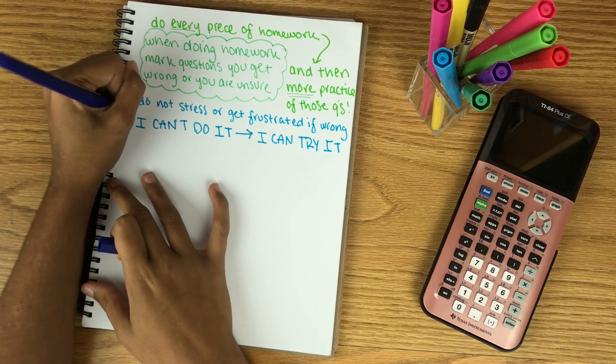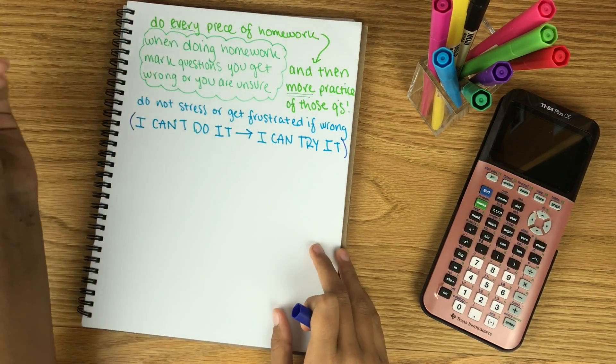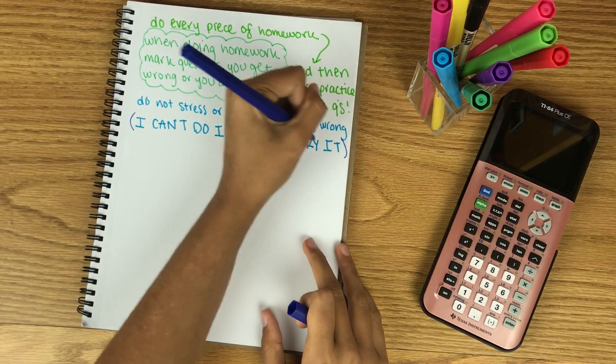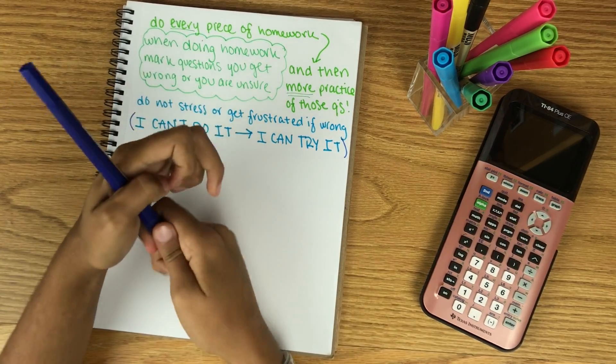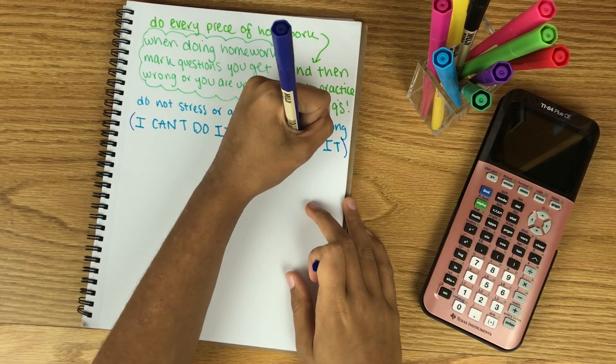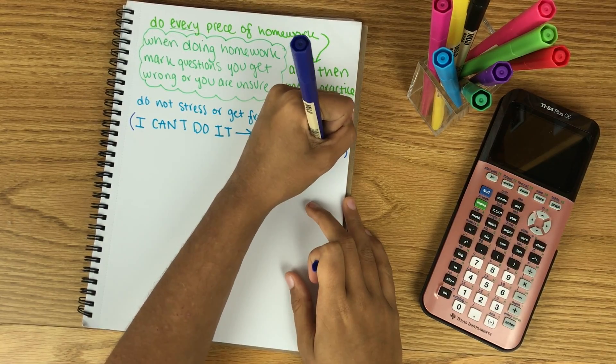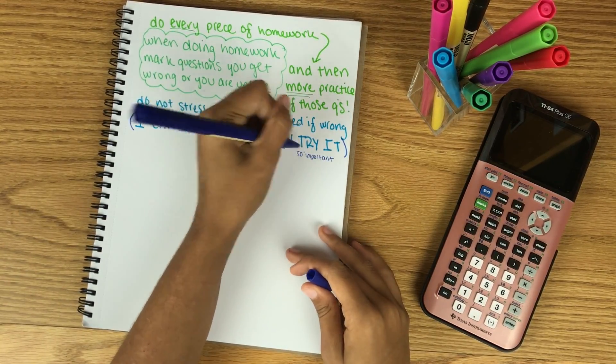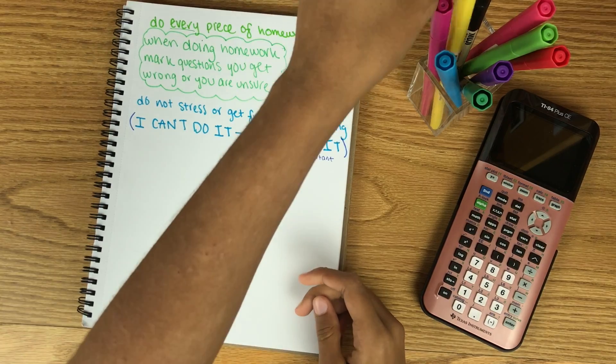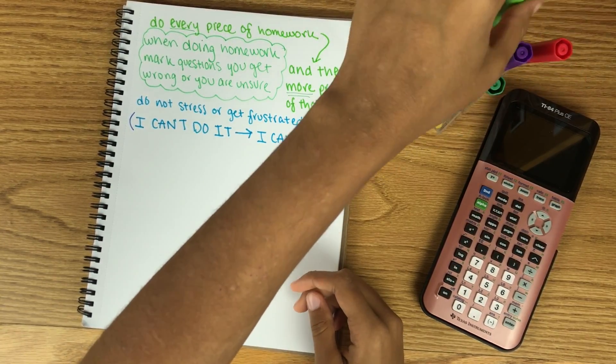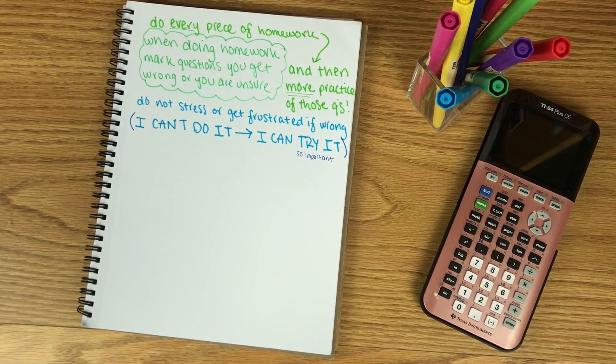So going along with that, I would highly, highly recommend changing the 'I can't do this' statement in your head to 'I can try it and I can attempt it and I can work to do better.' That mindset change for me specifically involving math has helped me so much as I approach different problems that I'm not very comfortable with.